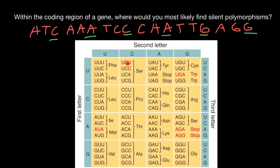This table here represents the codon sequence of the messenger RNA, so we have uracil here instead of thymine. This is the coding strand of the DNA, and the coding strand of the DNA is going to have the same sequence as the messenger RNA, with only one exception: thymine would be substituted with uracil. This codon table is based on the codons which we can find in the messenger RNA.